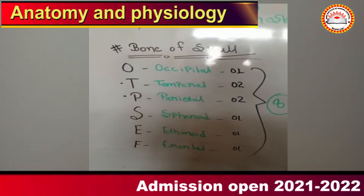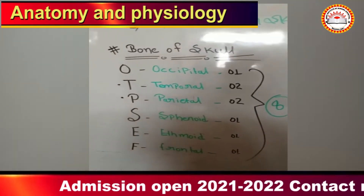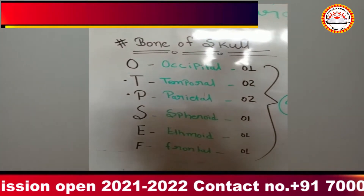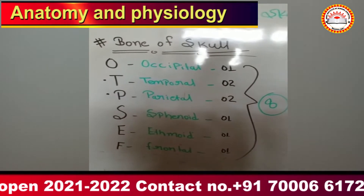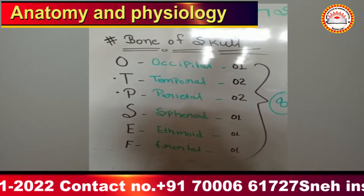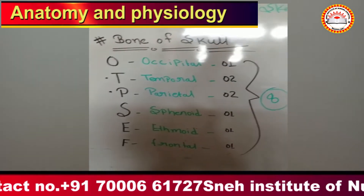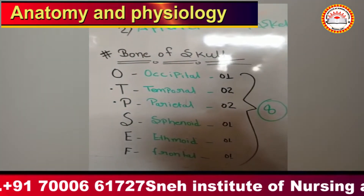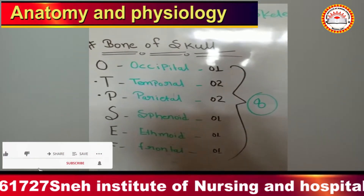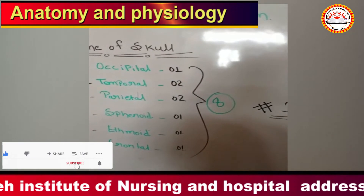You can see the bones of the skull. There is a code called OTP cell: O for occipital — 1 bone, T for temporal — 2 bones, P for parietal — 2 bones, S for sphenoid — 1 bone, E for ethmoid — 1 bone, F for frontal — 1 bone. So the total number is 8 bones of the cranium.